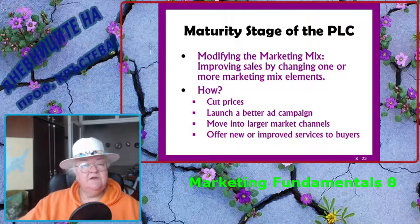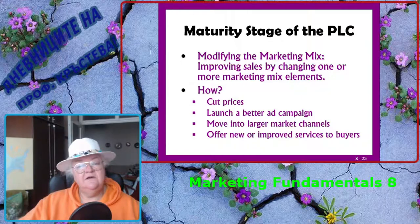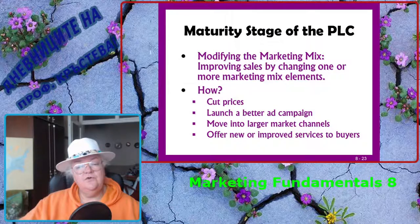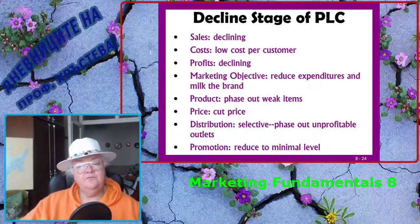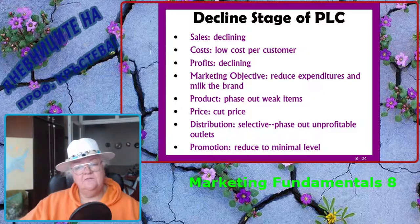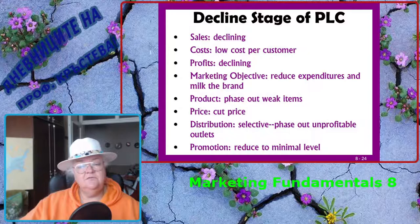You may also modify the marketing mix, improving sales by changing one or more marketing mix elements: cutting prices, launching a better ad campaign, moving into larger market segments or channels, or offering new or improved services to buyers. At the decline stage of the product life cycle, sales are declining, costs are low per consumer, and profits are declining. The marketing objective is to reduce expenditures and milk the brand. Phase out weak items, cut prices, and use selective distribution by phasing out unprofitable outlets. Reduce promotion to a minimal level.